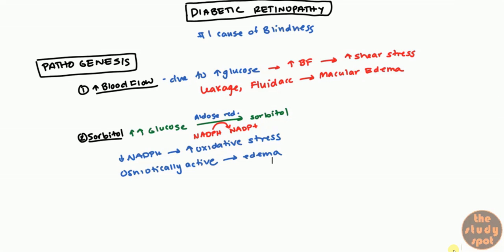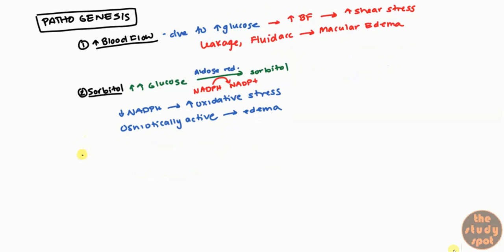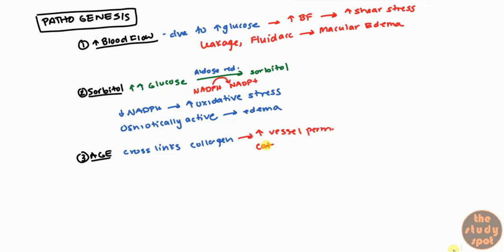Another mechanism involves advanced glycated end-products (AGEs). When you have hyperglycemia, it starts to glycate specific amino acids on proteins. The glycation of these amino acids eventually leads to cross-linking of collagen, and when you cross-link collagen, you increase vessel permeability, leading to more fluid leakage and edema. This also explains why diabetic patients tend to get cataracts — these cross-links in collagen can also form within the lens, leading to cataract formation.